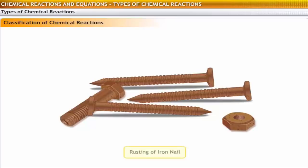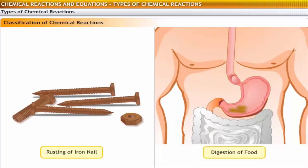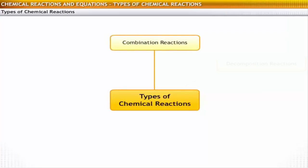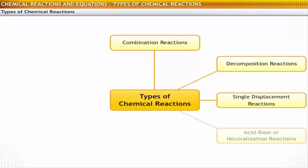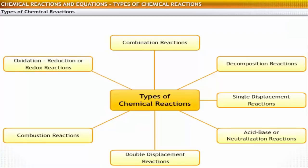Chemical reactions can be classified into the following types: combination reactions, decomposition reactions, single displacement reactions, acid-base or neutralization reactions, double displacement reactions, combustion reactions, and oxidation-reduction or redox reactions.